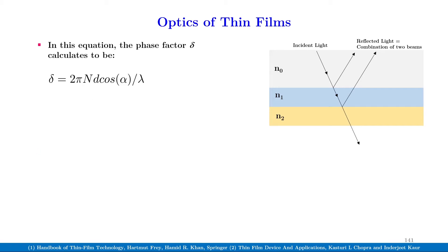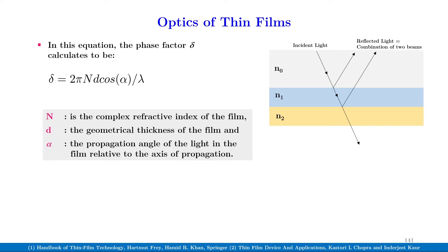In this equation, the phase factor delta calculates to be delta equal to 2π N d cos alpha divided by lambda, where N is the complex refractive index of the film, d the geometrical thickness of the film, and alpha the propagation angle of the light in the film relative to the axis of propagation.